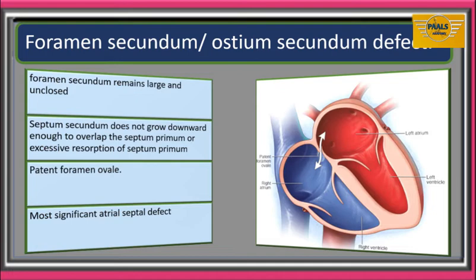As a result, foramen secundum remains large and unclosed. This will give rise to patent foramen ovale. It is the most significant atrial septum defect.